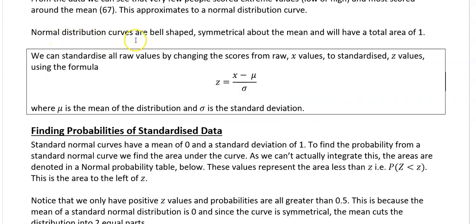Normal distribution curves are bell-shaped and symmetrical about the mean, and will have a total area of 1. We're going to show how we can use this for probabilities, but we use a set of standardized z-scores for tables.